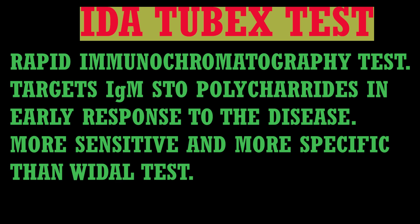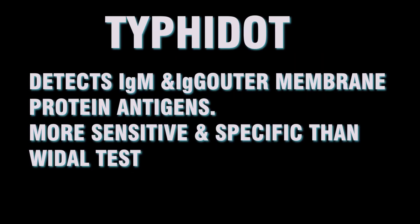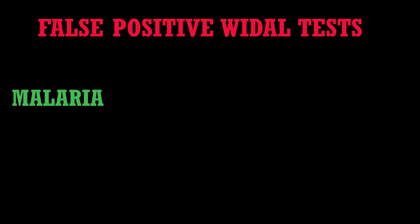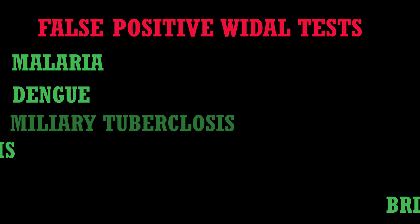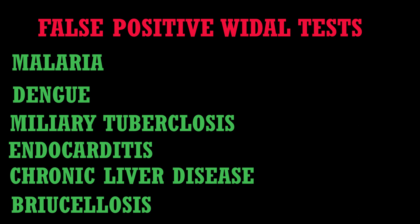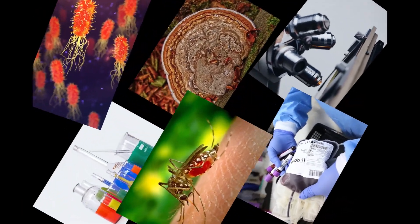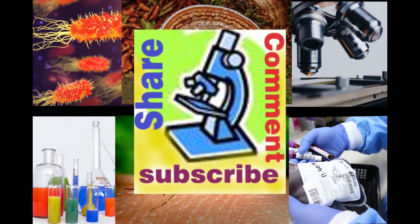Other rapid serological tests include the IDL Tubex test, a rapid immunochromatographic test that detects IgM antibodies to STO. An advantage of this method is that T-cell-dependent IgM responses target Salmonella typhi O polysaccharide, developed early in the illness. The Typhi Dot detects both IgM and IgG to a 250 kilodalton outer membrane protein antigen of Salmonella typhi. Due to the low sensitivity and specificity of the Widal test, a fourfold increase in antibody titer within a week is evidence for confirmation of typhoid fever. Patients with malaria, dengue, tuberculosis, endocarditis, chronic liver diseases, and brucellosis can cross-react with the Widal antigen and give a false positive Widal reaction.